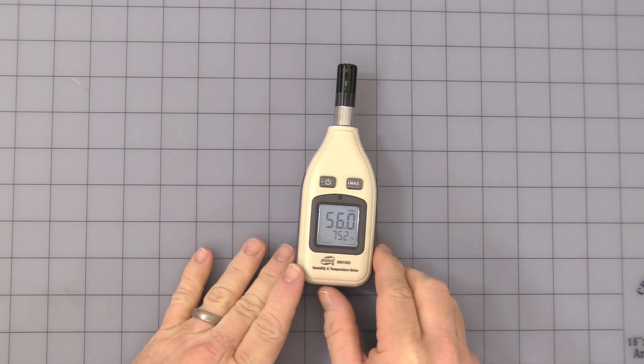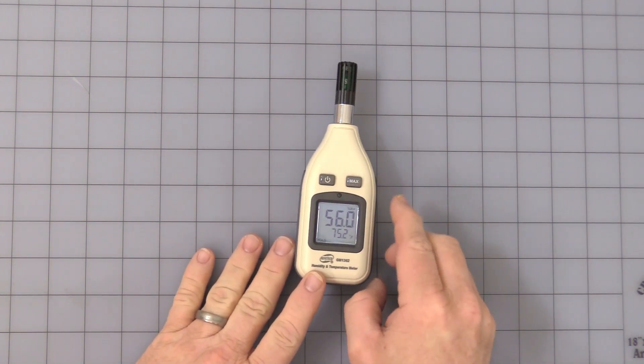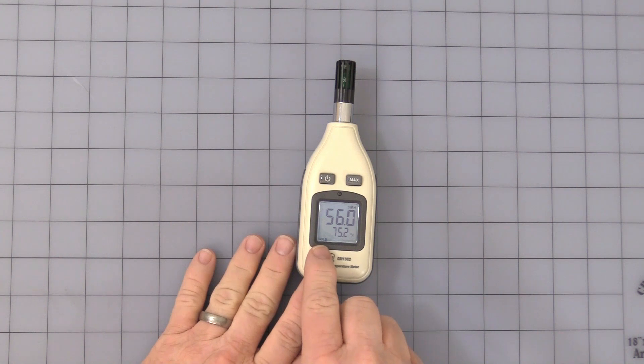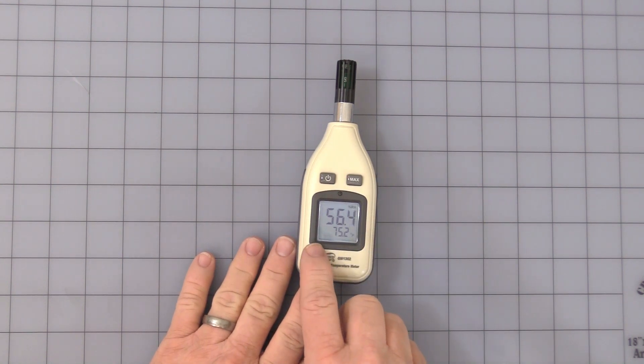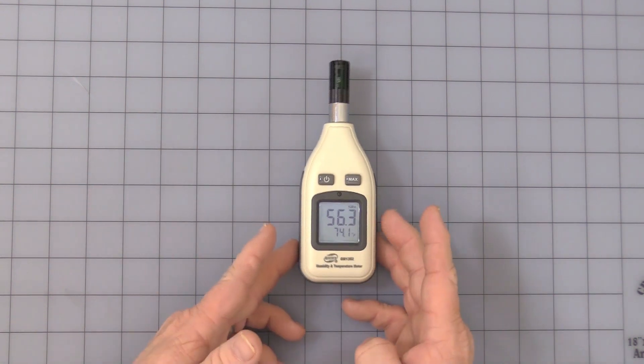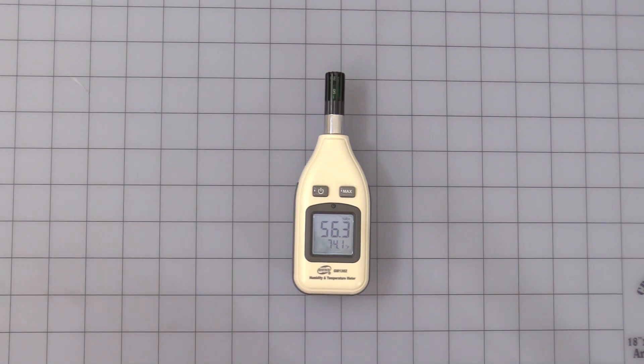Let's get into some of the functions here. You press the max button once, and you get a hold. That means it's going to hold the data. Press it again, it comes off, and it starts actively displaying what the temperature is. I believe the sampling rate is about two and a half times a second.